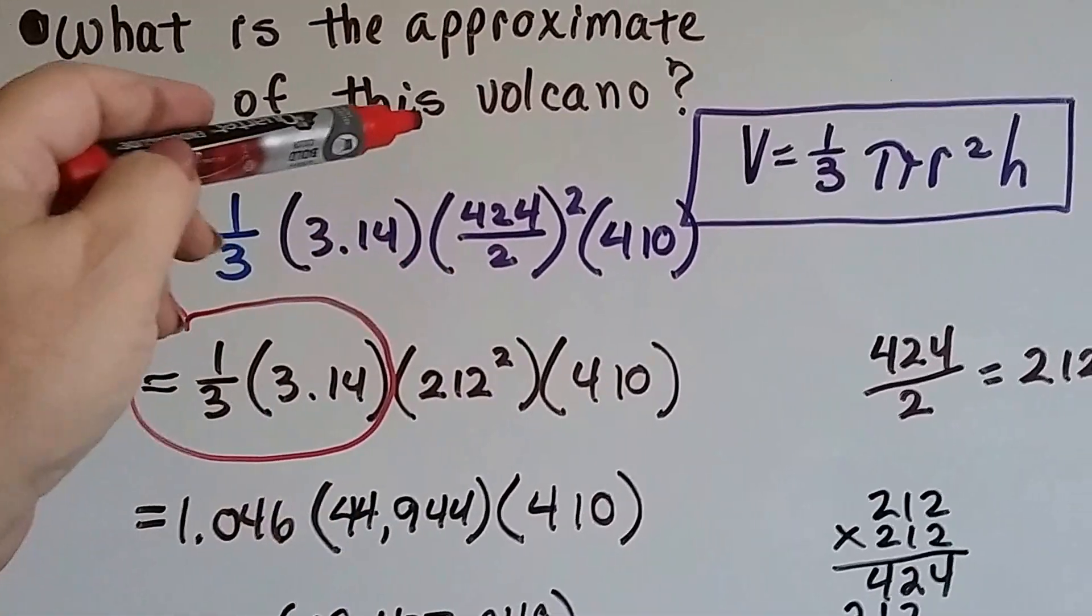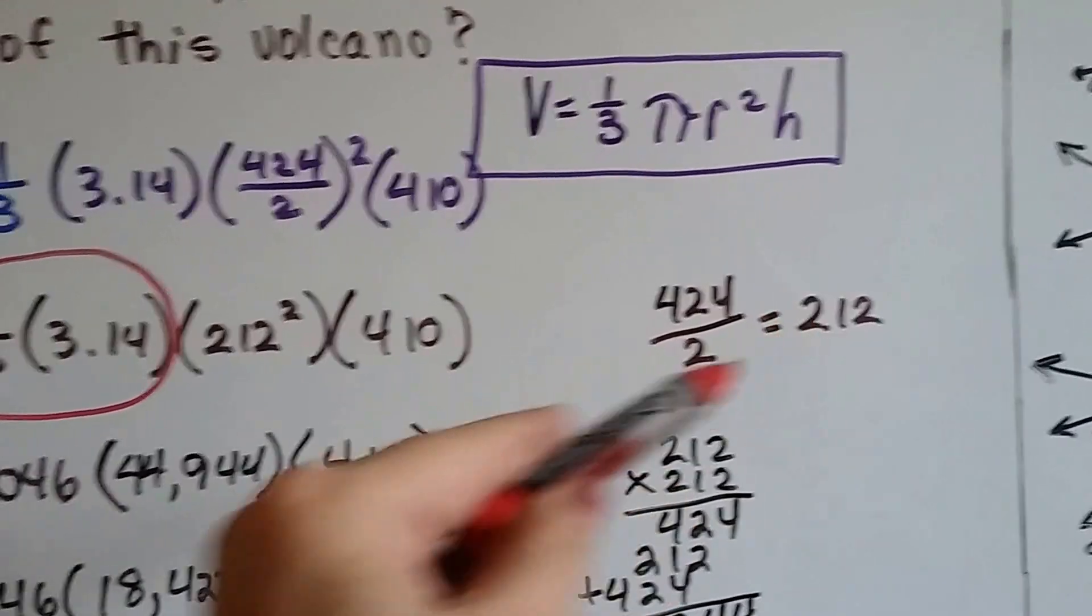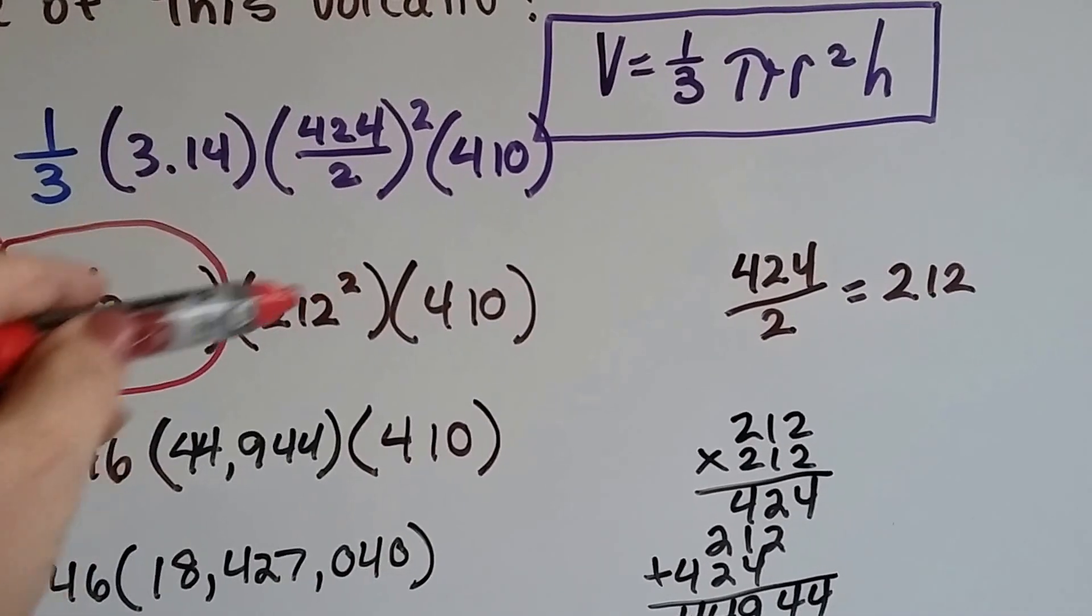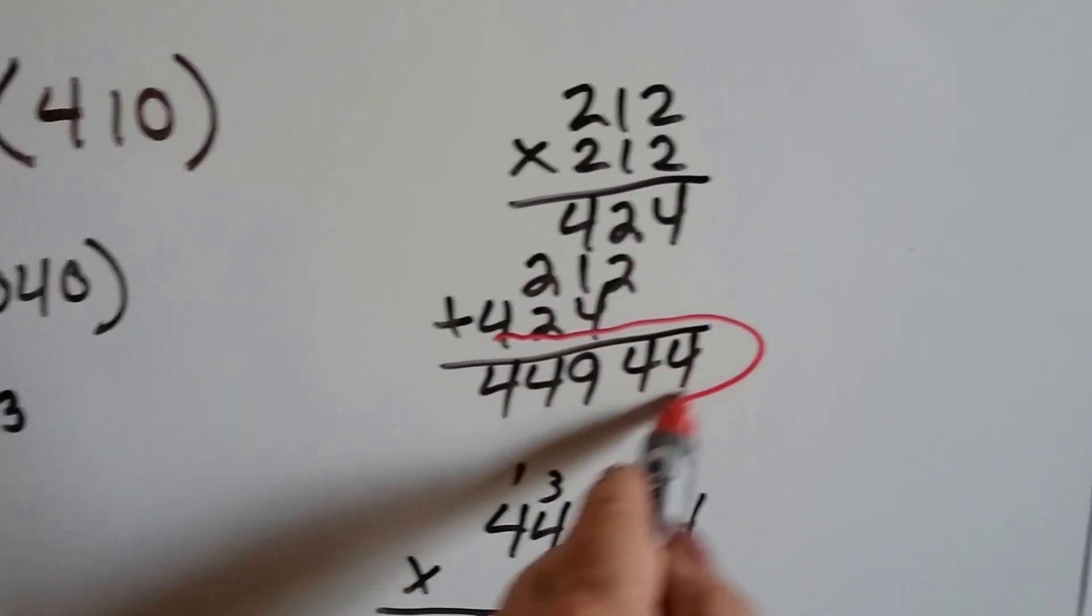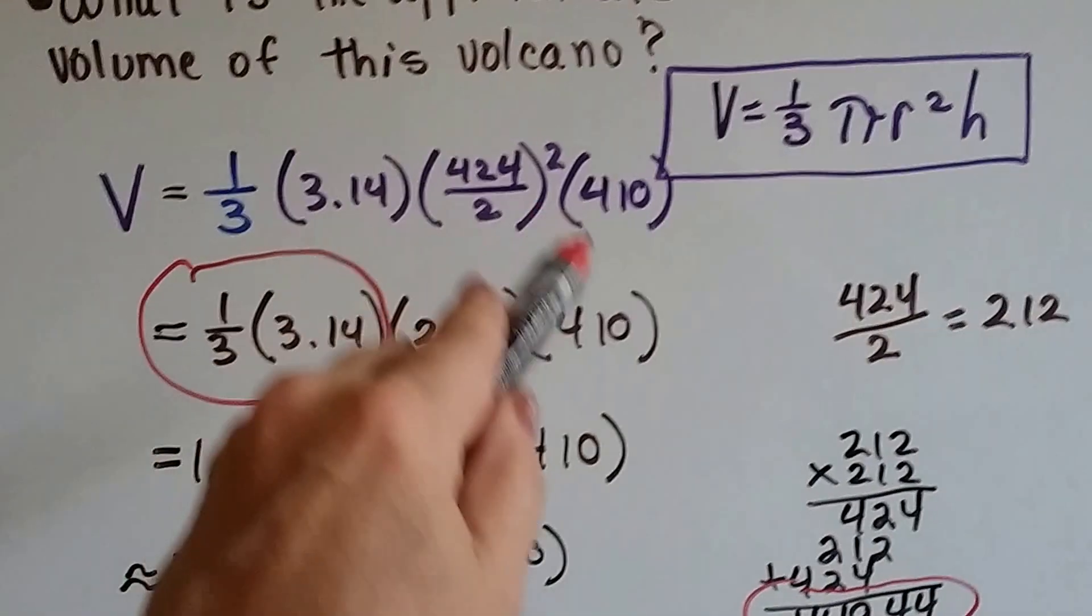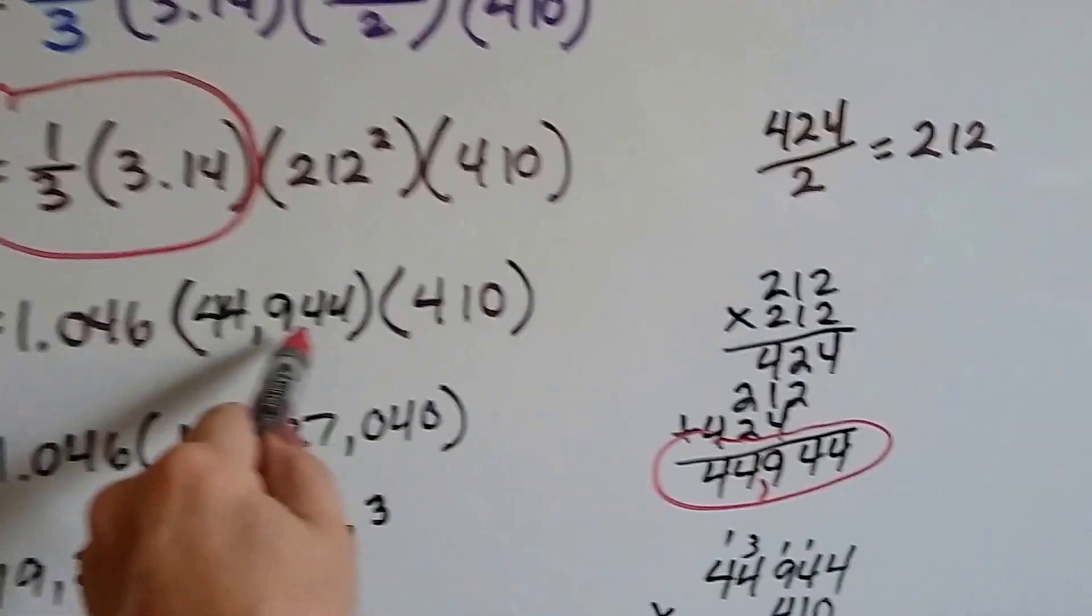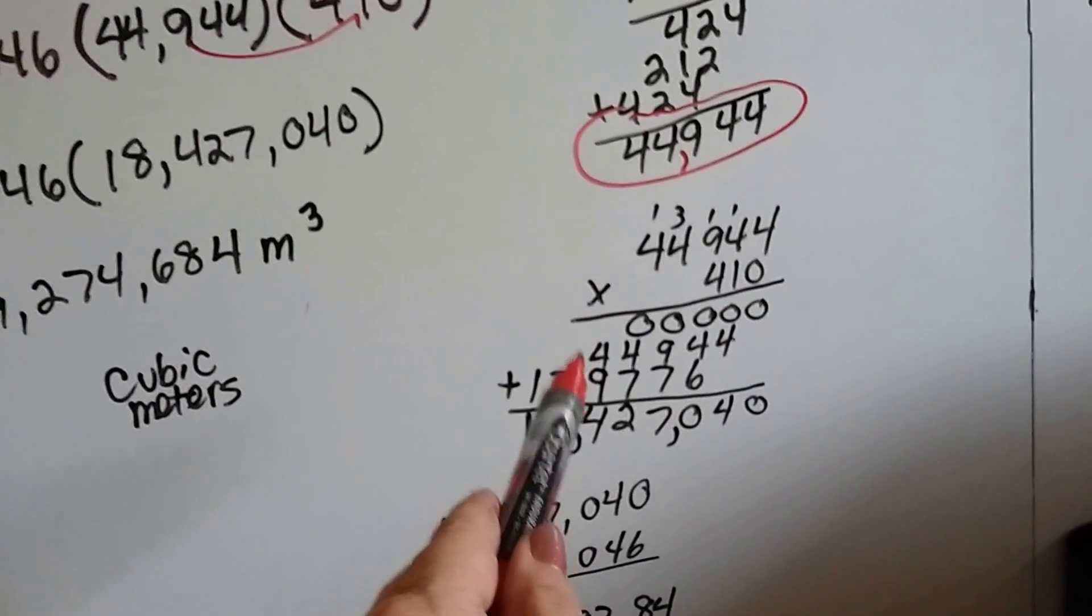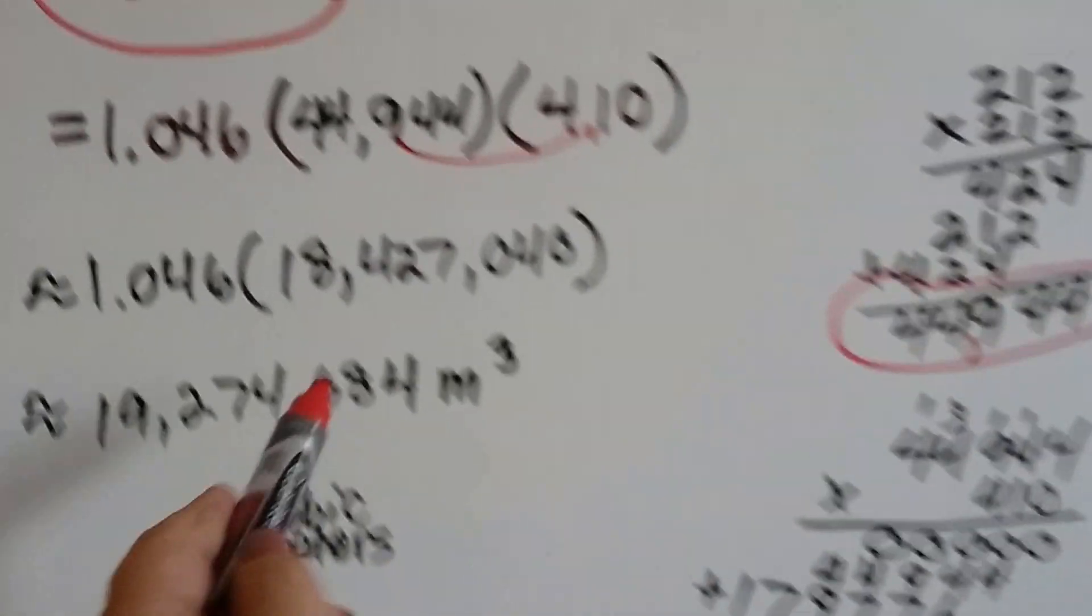Now, we divide the 424 in half, and we get 212, and now we have to do 212 squared. We have to multiply it to itself, and we get 44,944. We drop this 410 height down. Now we've got to multiply these two together, and when we do, 44,944 times 410, we get this 18 million number right here.